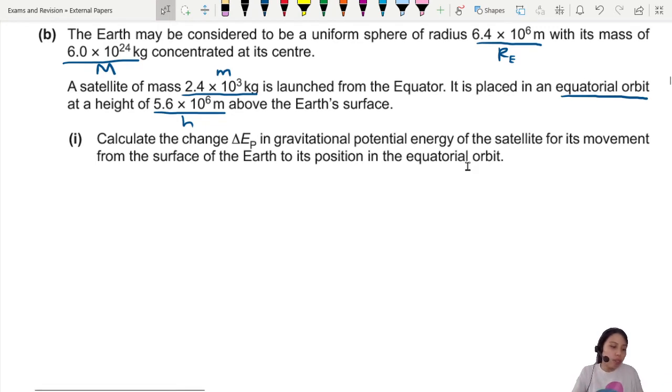Calculate the change in GPE of the satellite for its movements from surface up to orbit. So imagine now you're launching a rocket, goes up. Now it's up there orbiting. Satellites. They didn't give you a picture. So in gravitational chapter, if they never give you a picture, you gotta draw your own picture.